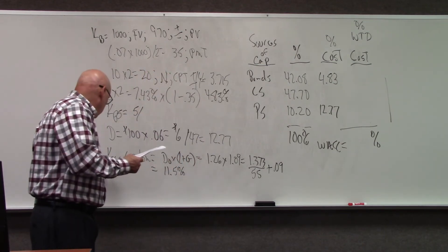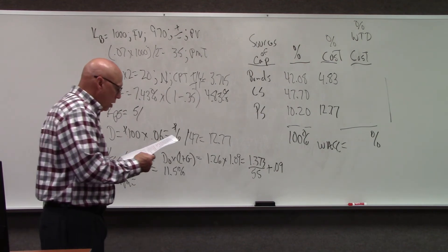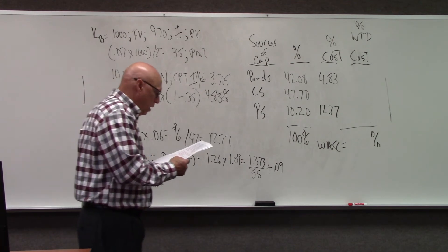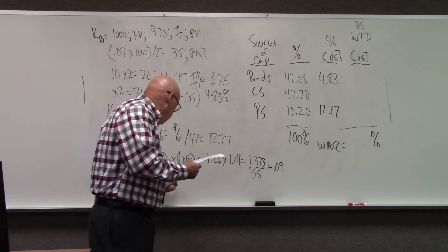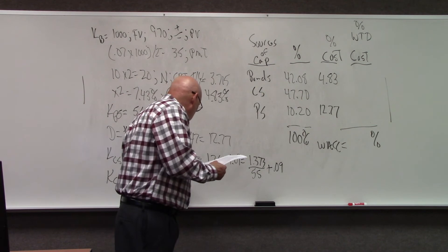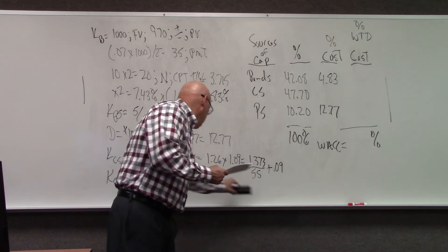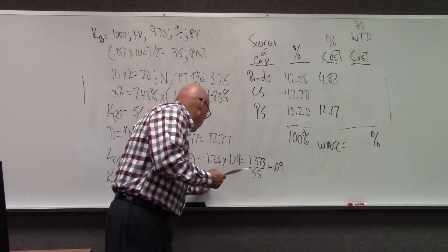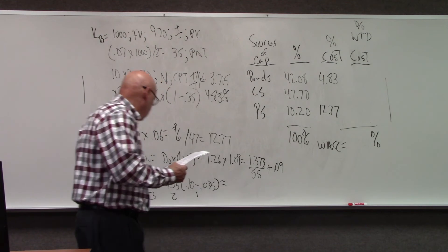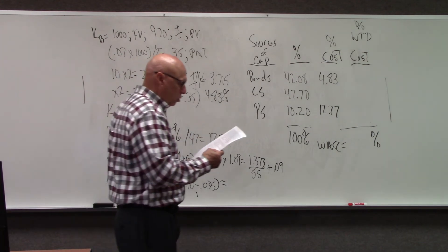Now let's do K using the CAPM. We've got the Treasury yield of 3.5%, we have the beta of 1.35, and we have the expected return of the market, which is 10%, minus the 3.5% risk-free rate. We're going to do this calculation and we come up with 12.275%.